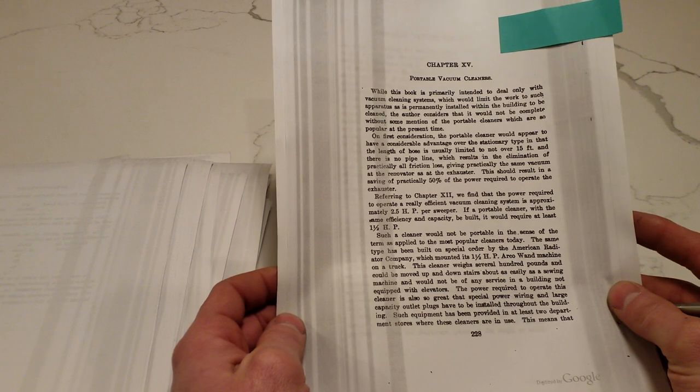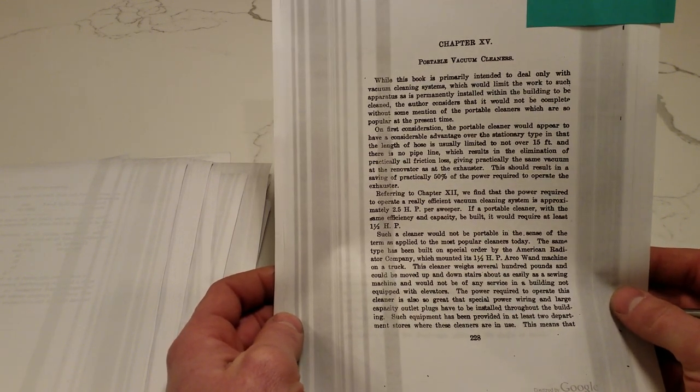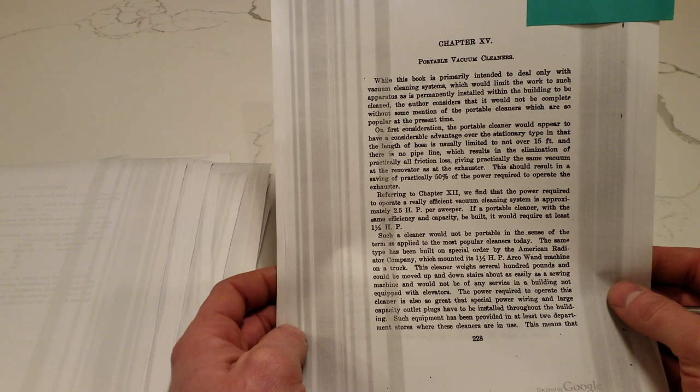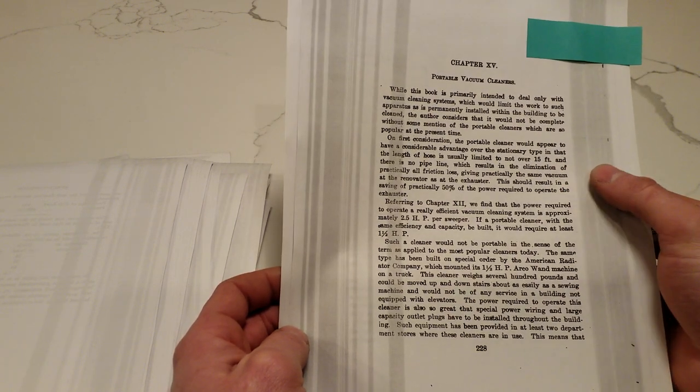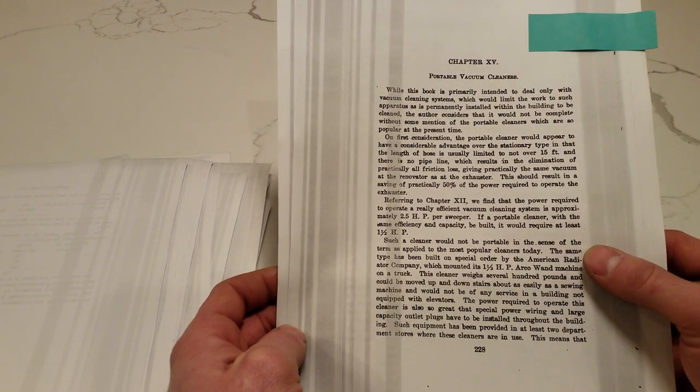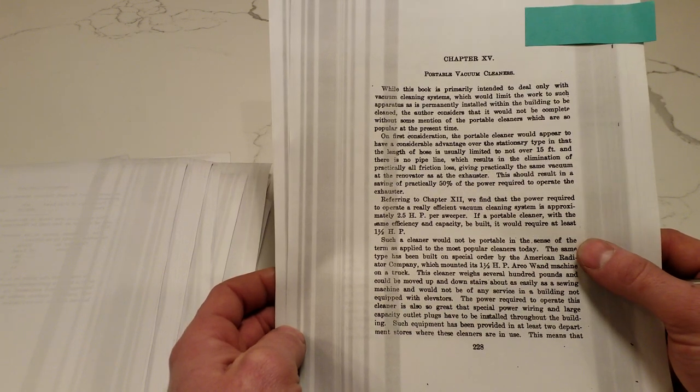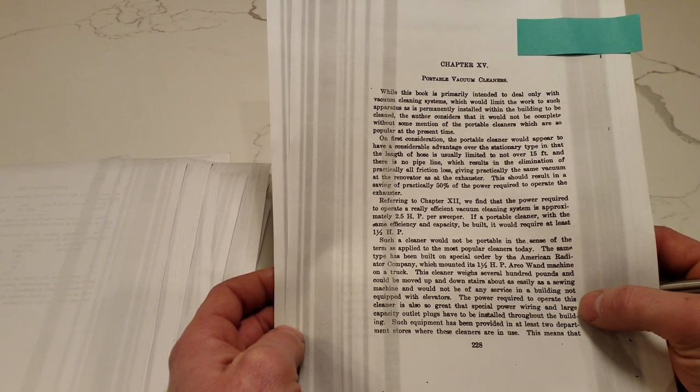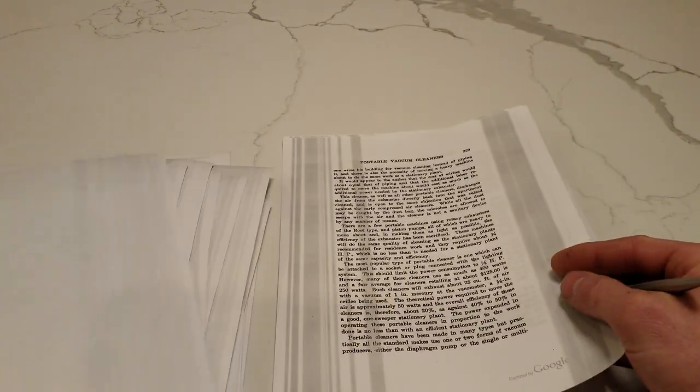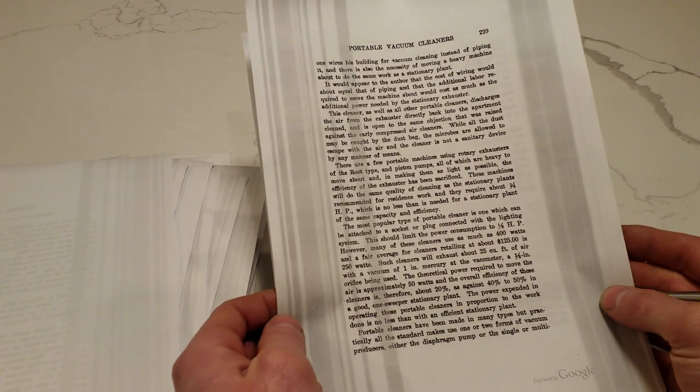Portable vacuum cleaners. On the first consideration the portable cleaner would appear to have a considerable advantage over the stationary type in that the length of hose is usually limited to not over 15 feet and there is no pipeline. This should read also in a saving of practically 50% of the power required to operate the exhaustor. Such a cleaner would not be portable in the sense of the term as applied to the popular cleaners today. The power required is so great that special power wiring and large capacity outlet plugs have to be installed. This means that one wires his building for vacuum cleaning instead of piping it and there is also the necessity of moving a heavy machine about.